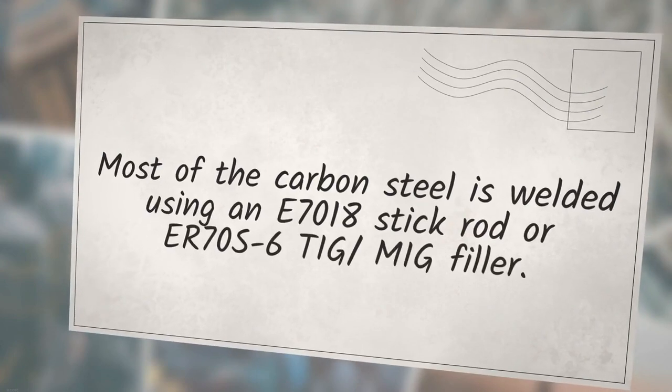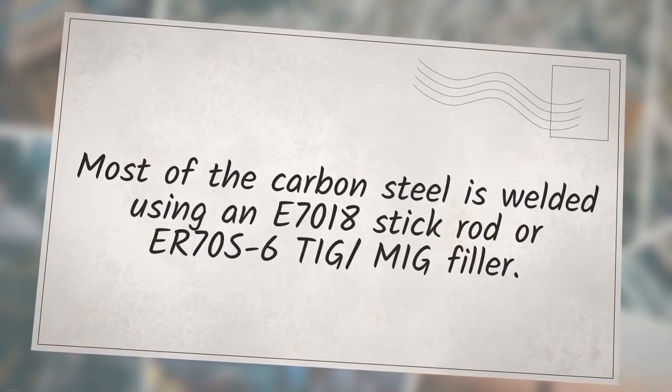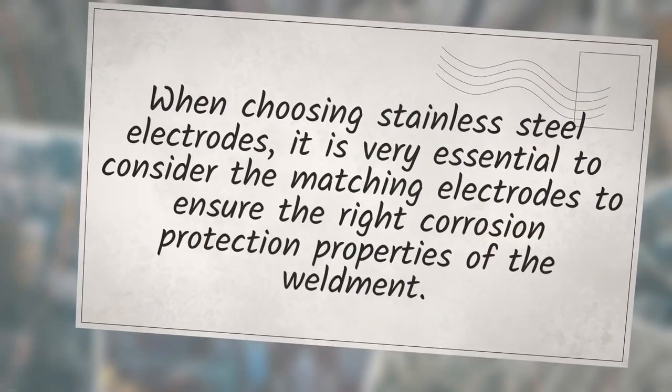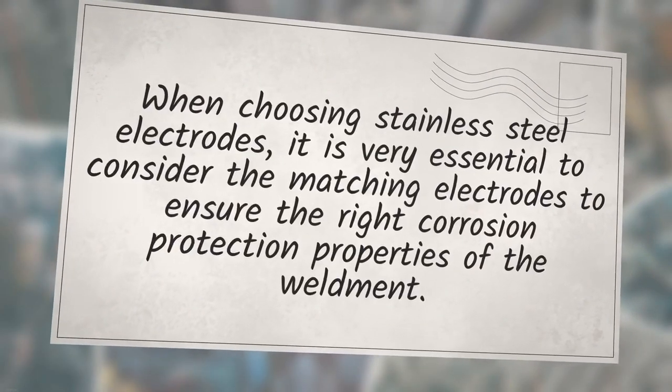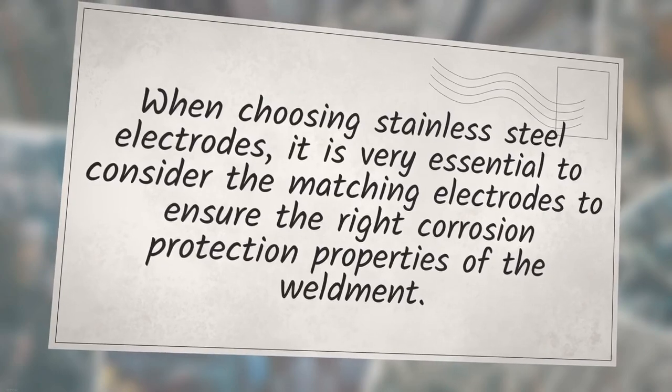Most of the carbon steel is welded using an E7018 stick rod or ER70S6 TIG/MIG filler. When choosing stainless steel electrodes, it is very essential to consider the matching electrodes to ensure the right corrosion protection properties of the weldment.